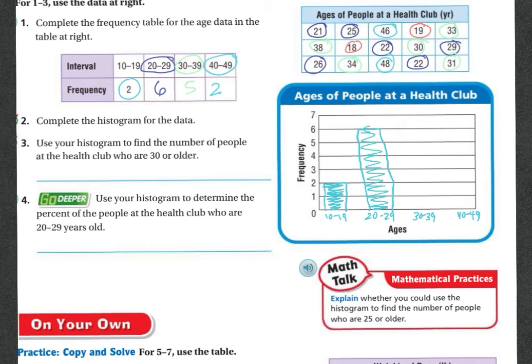The next one is 30 through 39s, and I've got 5, so that means my bar is going to go up here to the 5. I'm going to color it in. And then finally, 40 through 49, it's 2, so my bar is only going to go up to here. And I'm going to color it in.